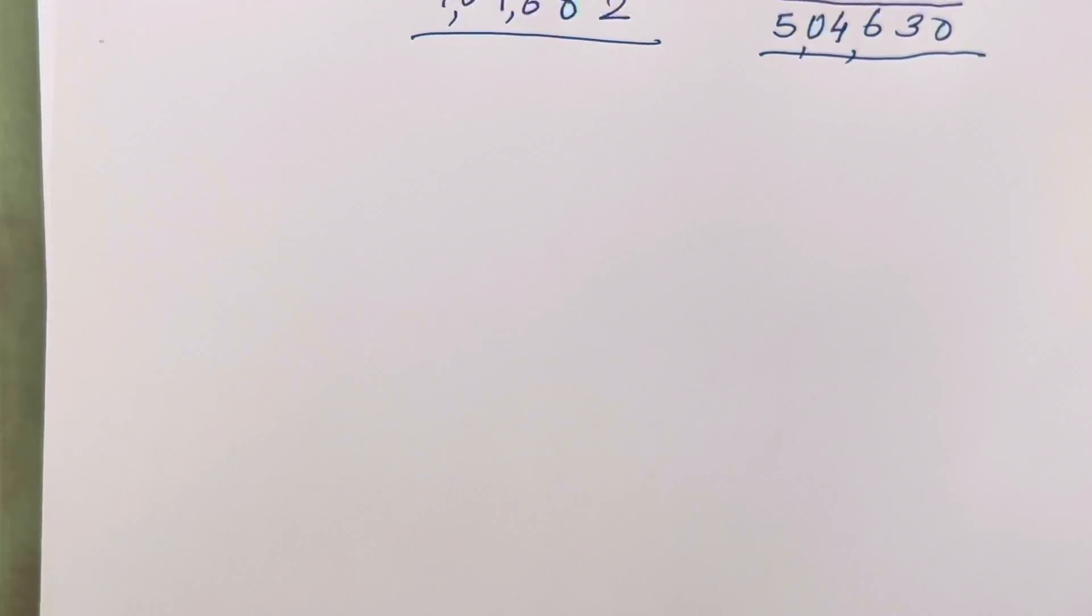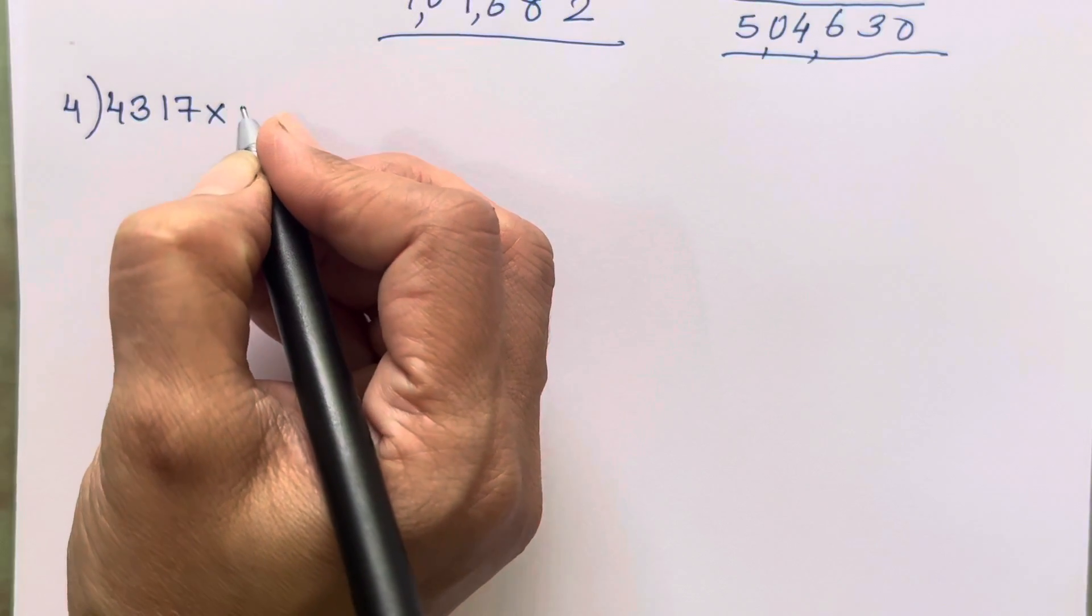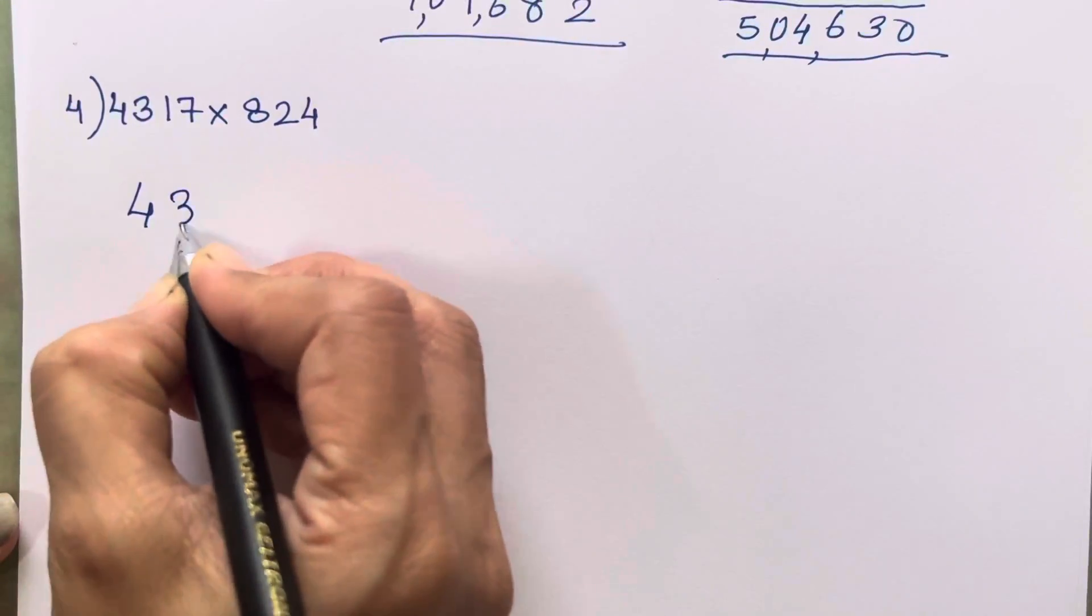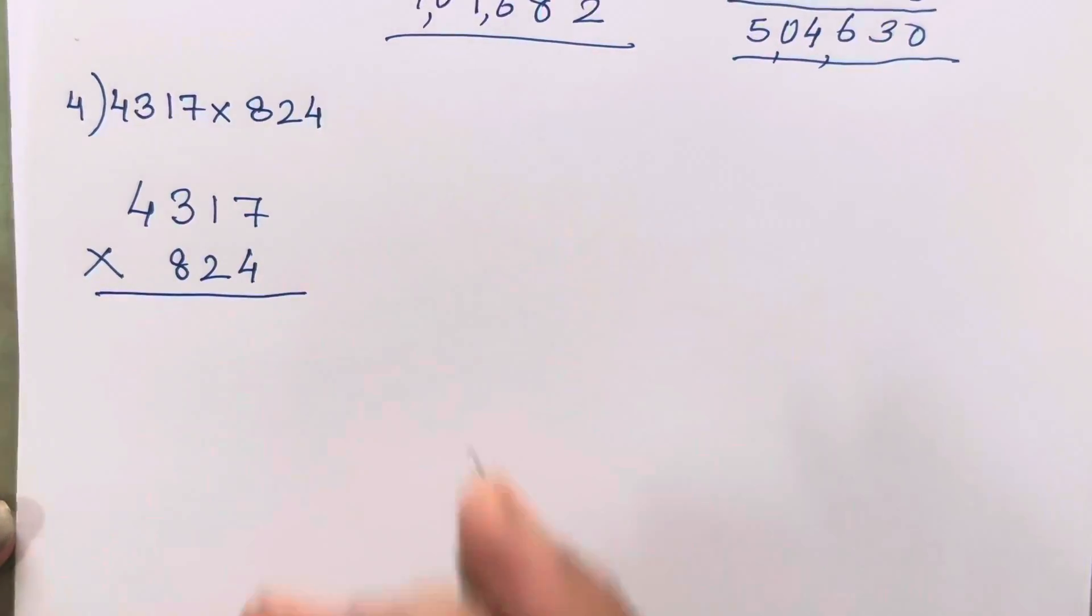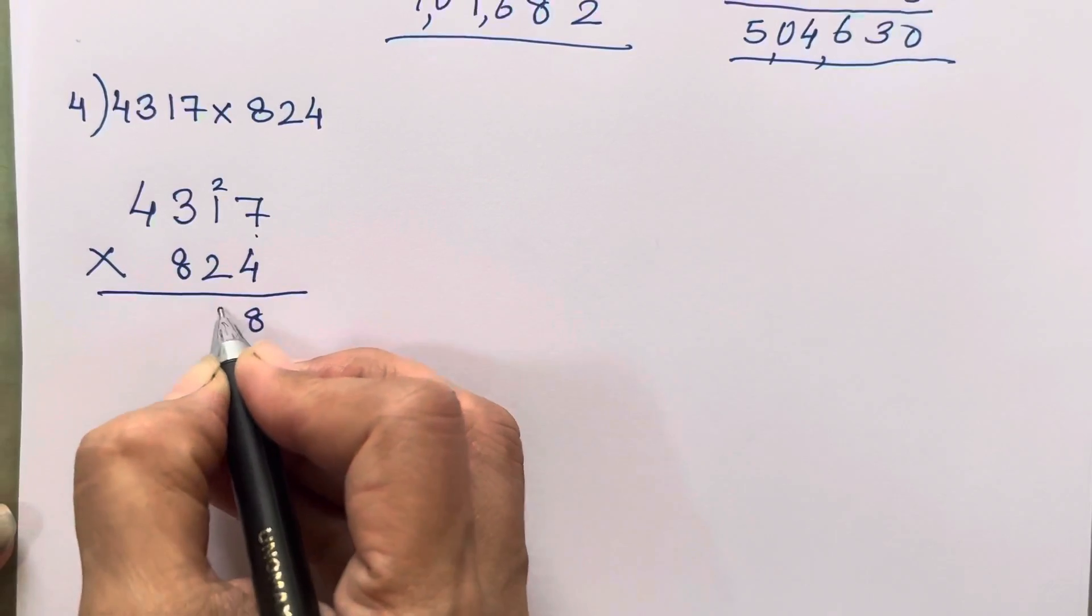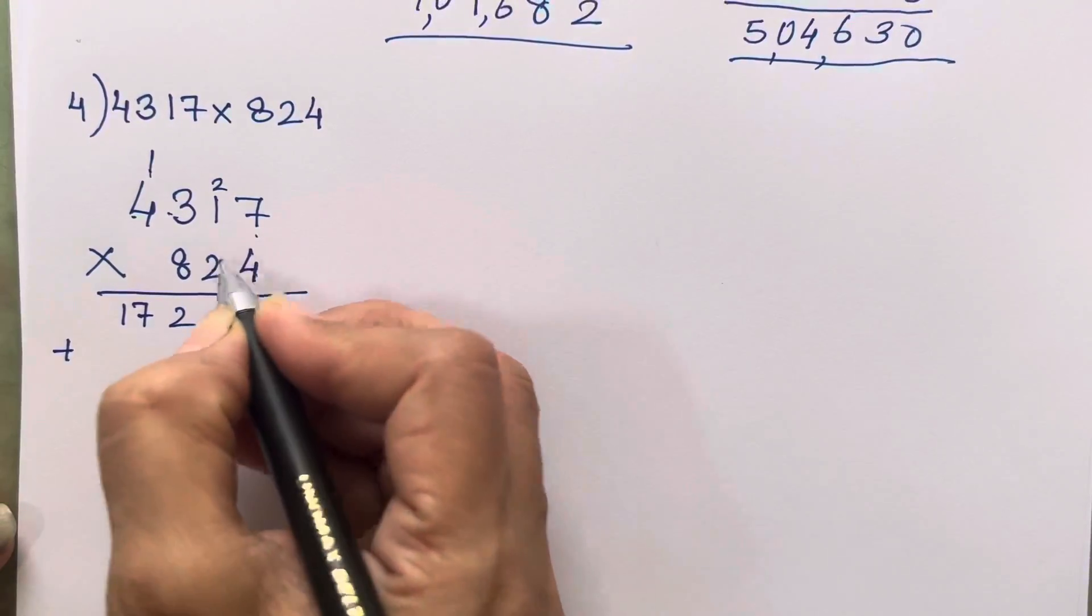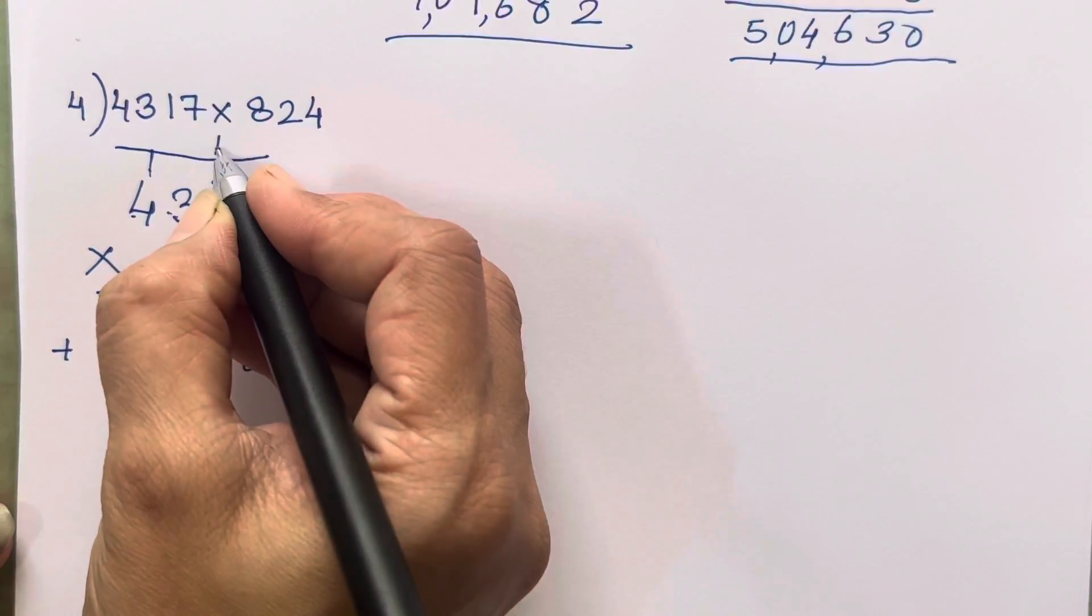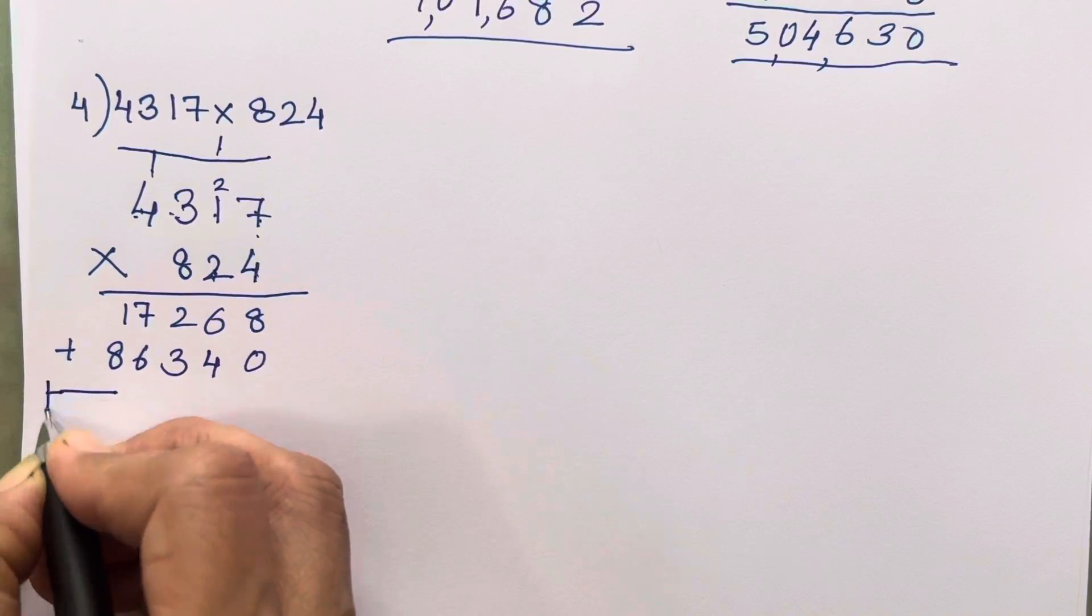Let's move on to the fourth sum now. Fourth sum is 4370. Now the numbers are going to increase children but the method of solving is same. The upper number might have 4 digits but the below ones are going to be only 2 or 3 digits. 4 sevens are 28, 4 ones are 4, 5, 6. 4 threes are 12, 4 fours are 16 plus 1, 17. We will draw one line.